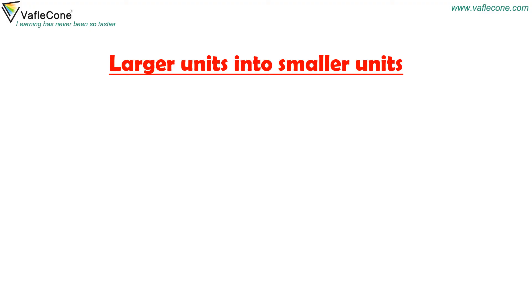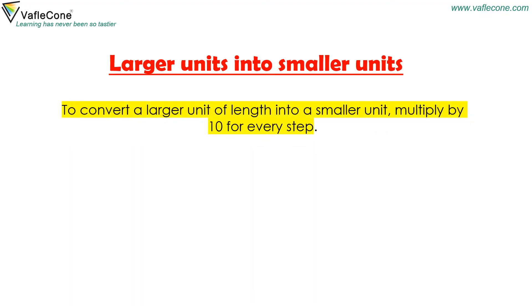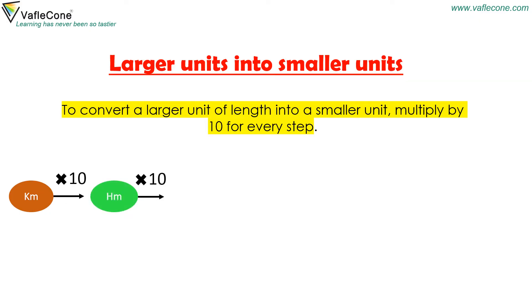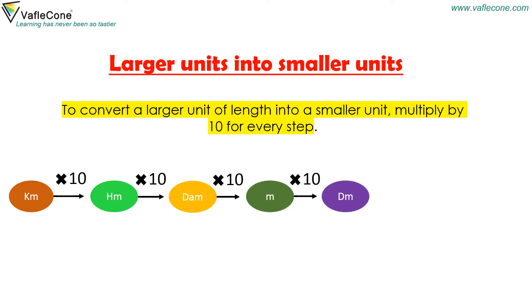To convert a larger unit of length into a smaller unit, multiply by 10 for every step. Kilometer is multiplied by 10 to get hectometer, hectometer is multiplied by 10 to get decameter, decameter is multiplied by 10 to get meter, meter is multiplied by 10 to get decimeter, decimeter is multiplied by 10 to get centimeter, centimeter is multiplied by 10 to get millimeter.